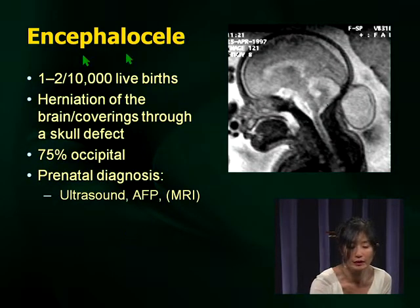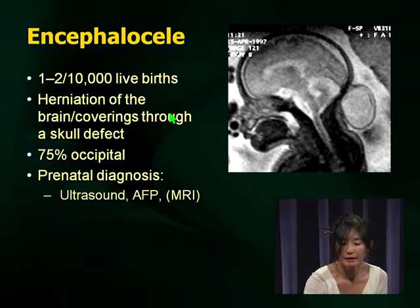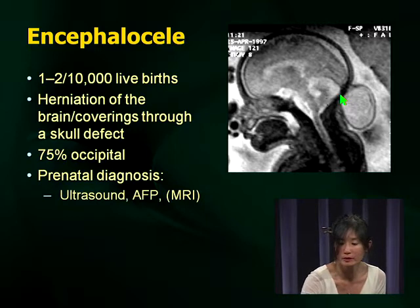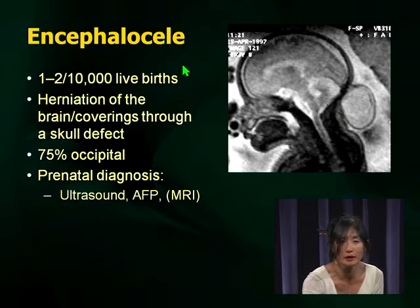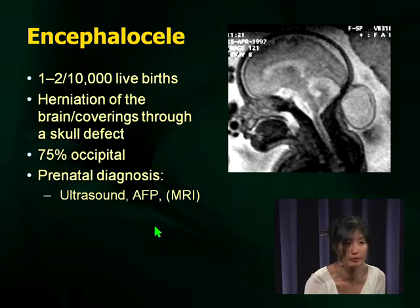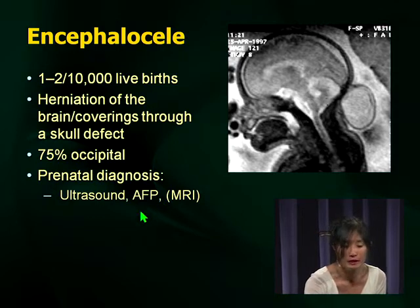Encephalocele is rarer — 0.1 per 1,000 live births. Here's a fetal MRI showing an outpouching at the occiput. Most encephaloceles you will see or hear about are going to be occipital. Again, prenatal diagnosis is through AFP — remember that AFP is what you need for prenatal diagnosis. It is a herniation through a skull defect, whereas spina bifida is down the spine.